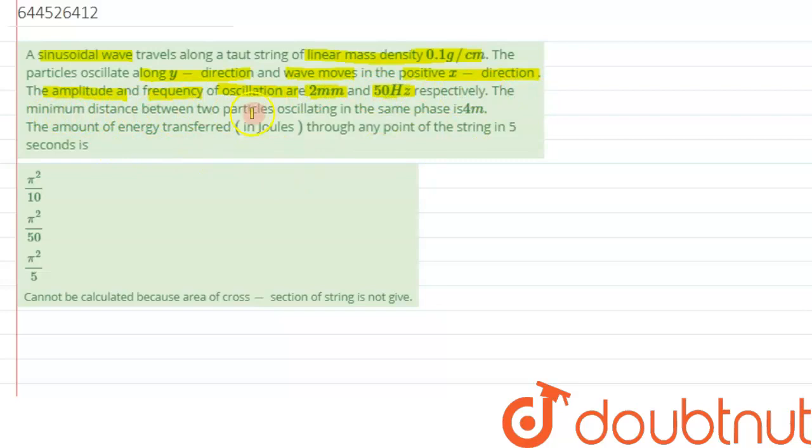The minimum distance between the two particles oscillating in the same phase is 4 meter. So minimum distance has been given, that is wavelength.